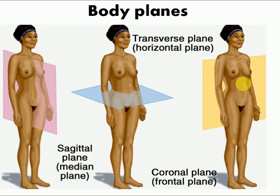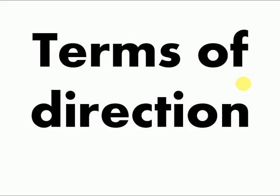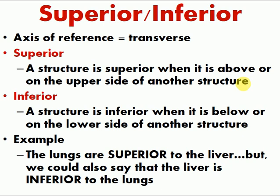When explaining positions of different organs, we should know about these planes. Starting with terms of directions: superior and inferior use the transverse plane as axis of reference. A structure is superior when it is above or on the upper side of another structure. A structure is inferior when it is below or on the lower side of another. For example, the lungs are superior to the liver, or the liver is inferior to the lungs.